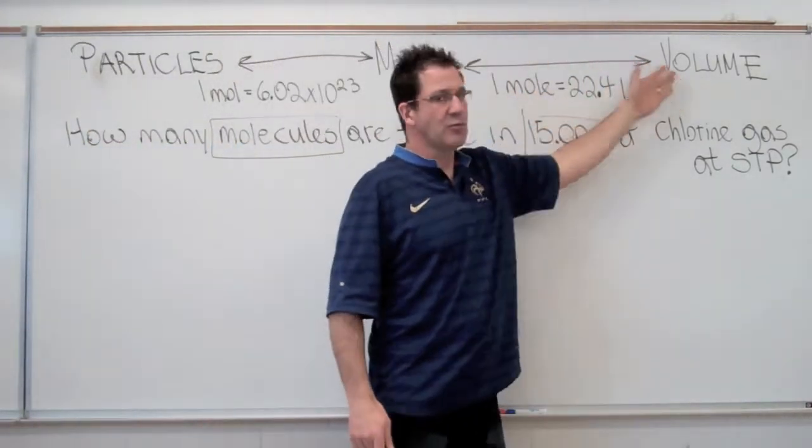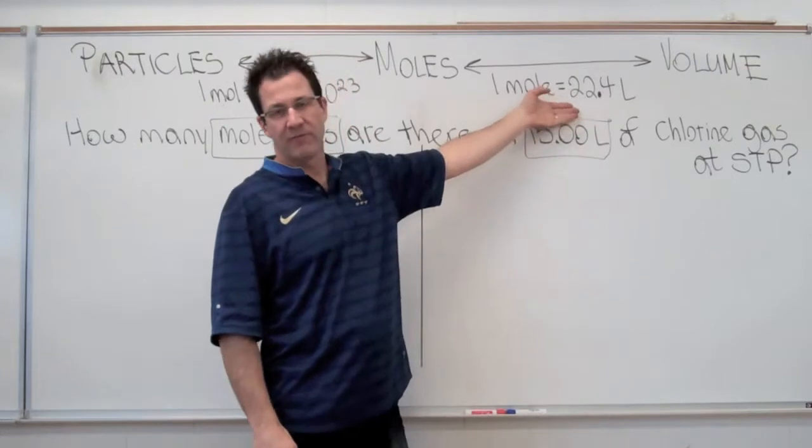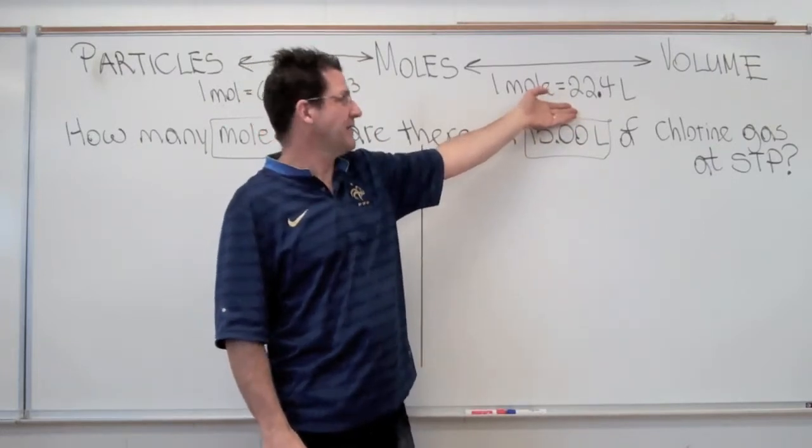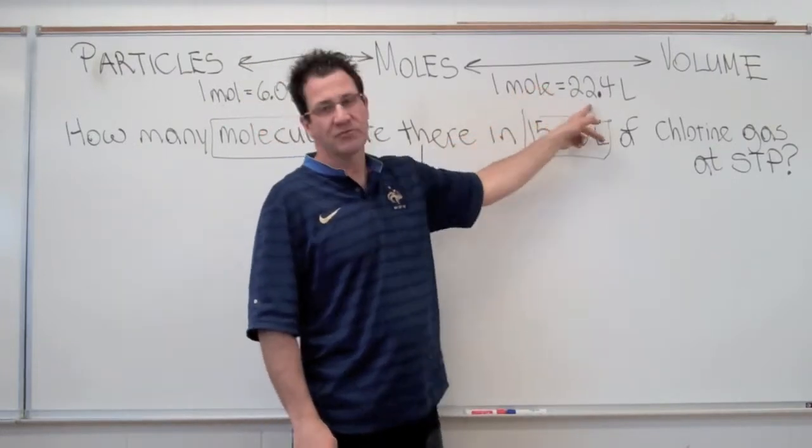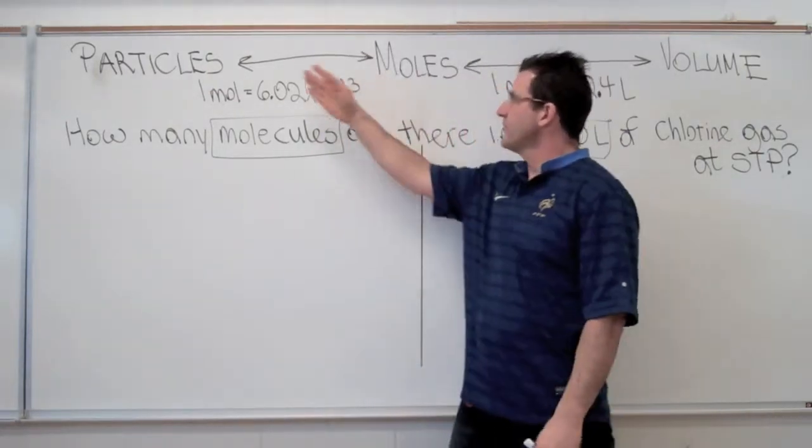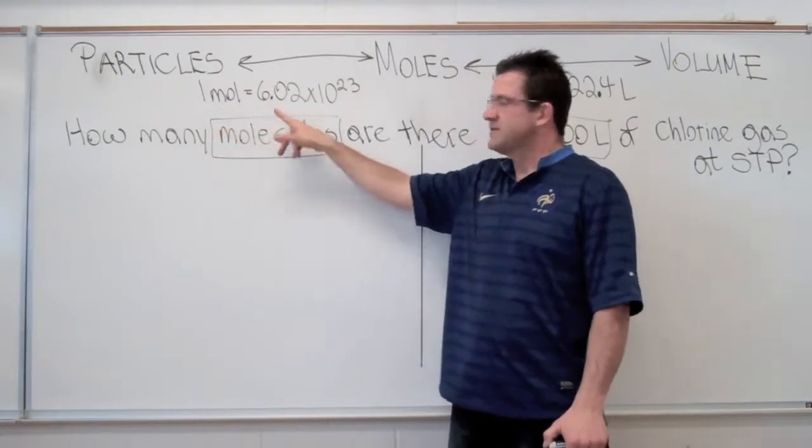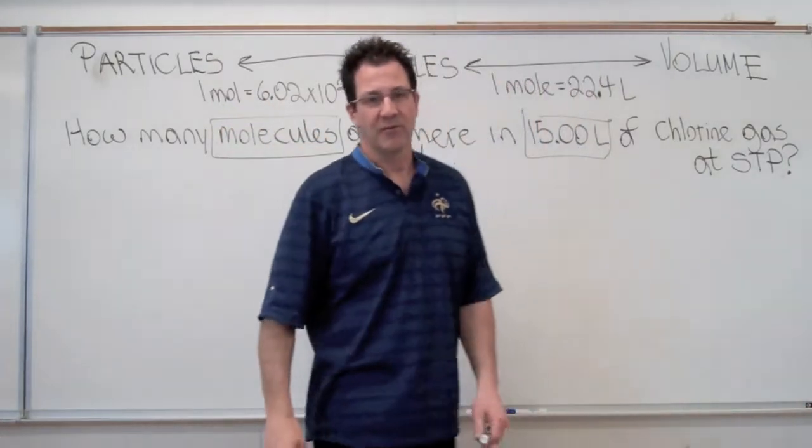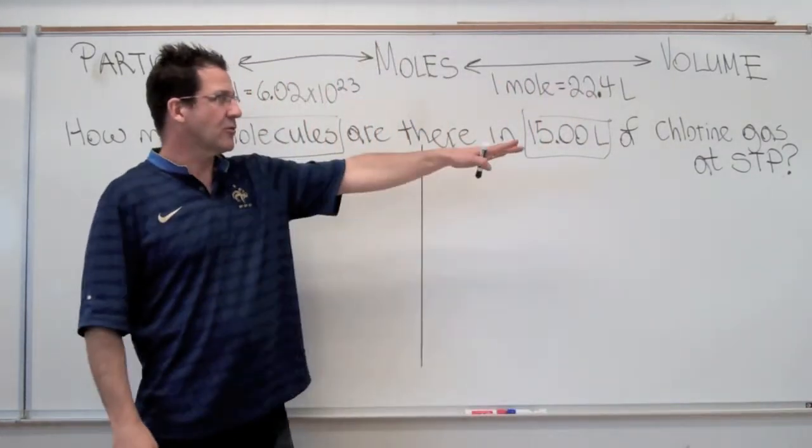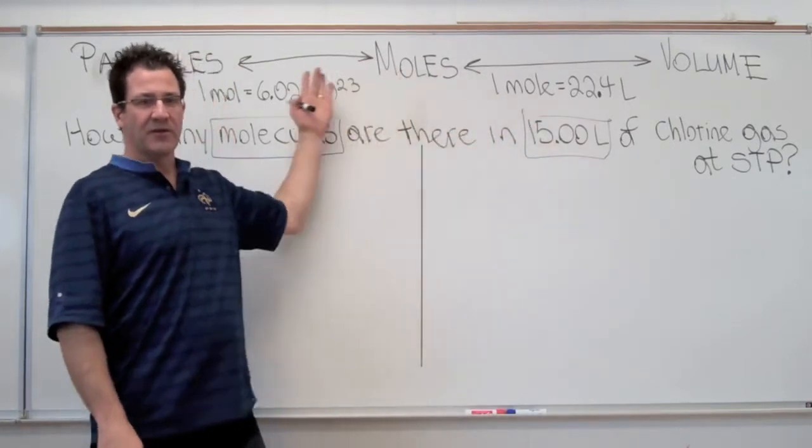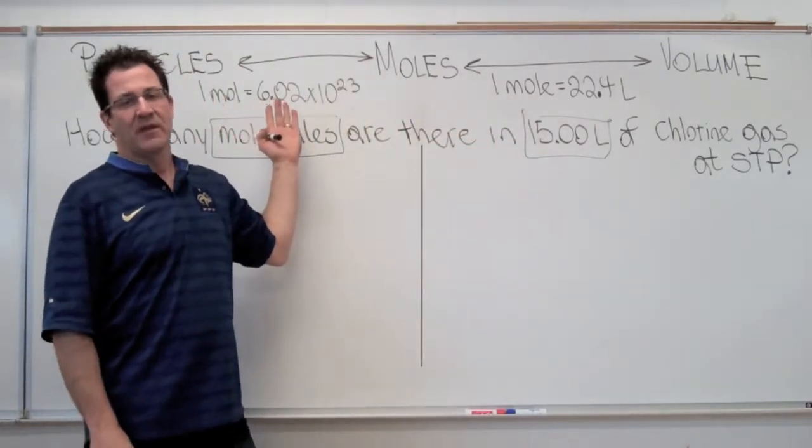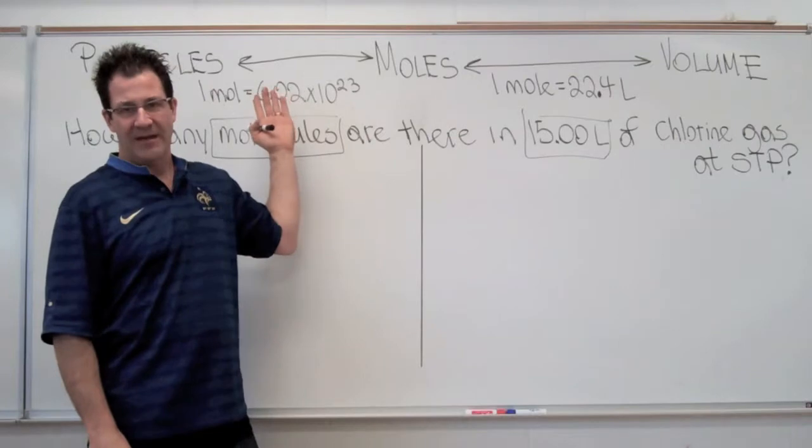To get from volume to moles, we're going to use the molar volume of one mole of gas at standard temperature and pressure, which equals 22.4 liters. Then when we go from moles to particles, we're going to use Avogadro's constant: one mole equals 6.02 times 10 to the 23rd particles. It does say chlorine gas, but it's interesting to notice that we're not going to be using the molar mass of chlorine gas, just the molar volume and Avogadro's constant.